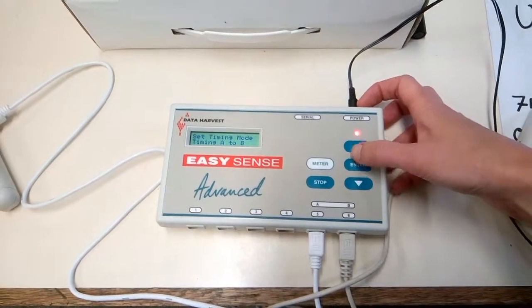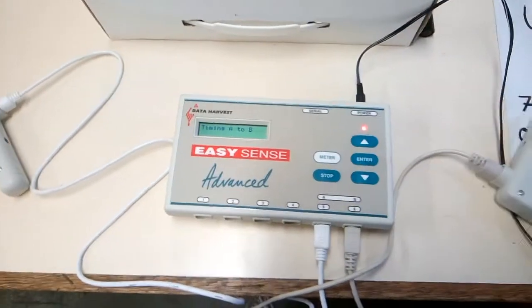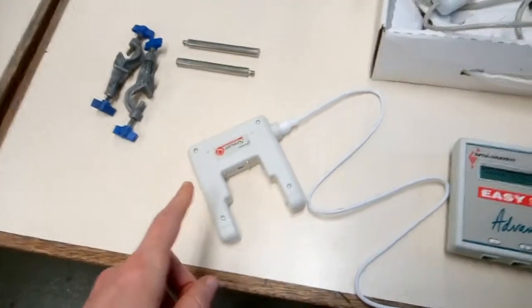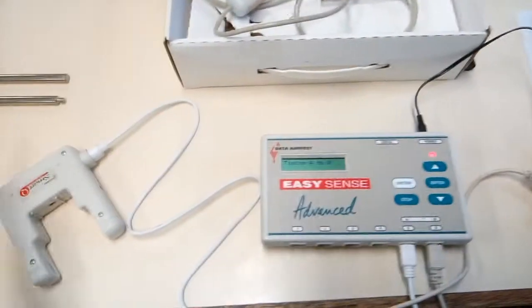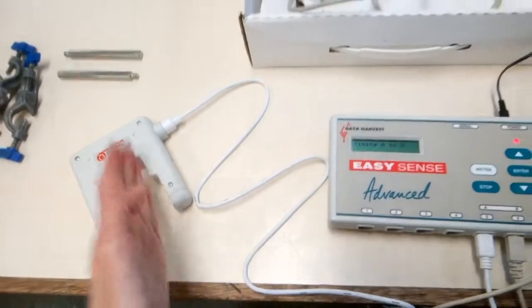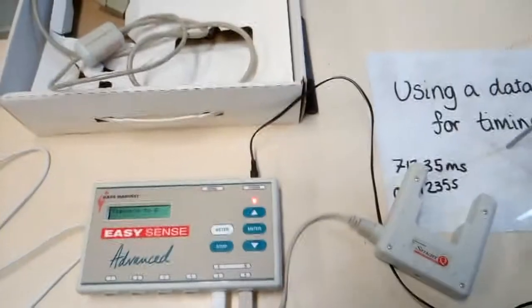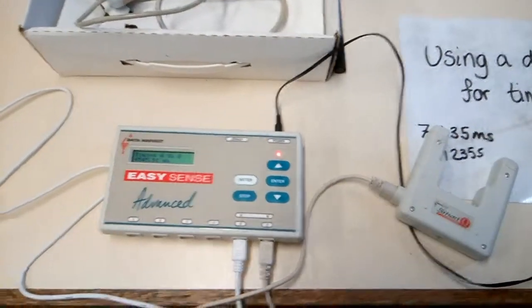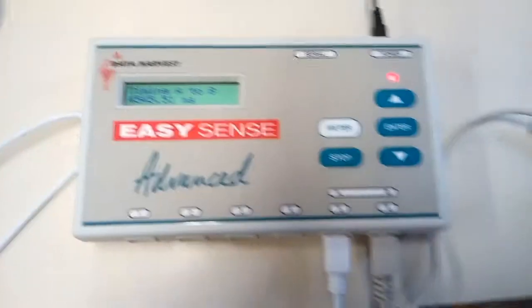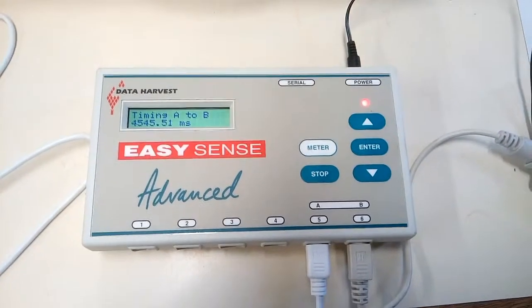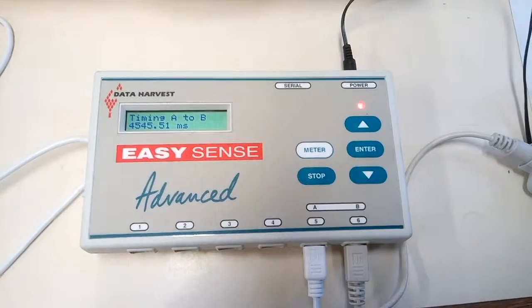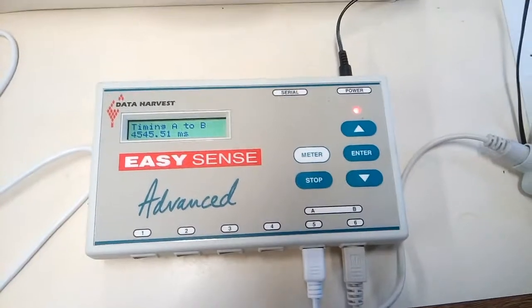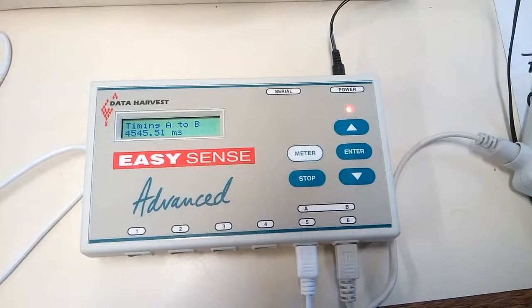We want to set timing mode A to B. Then what happens is, I've got this light gate in at port A, this light gate in at port B. If we had them set up so something could break the light in A, then break the light in B, that would tell us the time in between A and B. There, 4545.51 milliseconds. Divide by 1,000, that's just over 4.5 seconds.